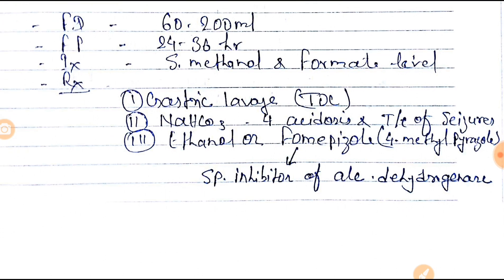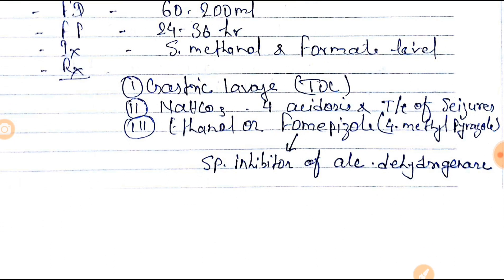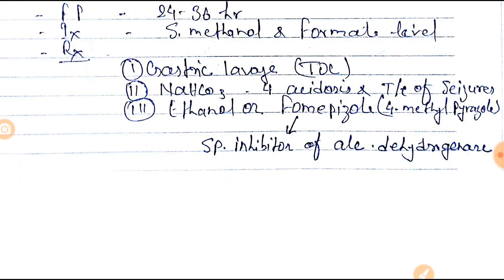Other treatments include Ethanol or Fomepizole (4-methylpyrazole). Fomepizole is a specific inhibitor of alcohol dehydrogenase. It inhibits alcohol dehydrogenase so that formic acid is not formed, thereby correcting Methanol poisoning.